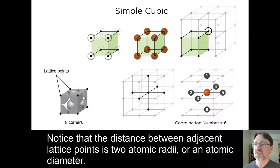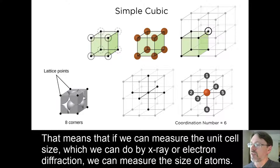Notice that the distance between adjacent lattice points is two atomic radii, or an atomic diameter. This means that if we can measure the unit cell size, which we can do by x-ray or electron diffraction, we can measure the size of atoms.